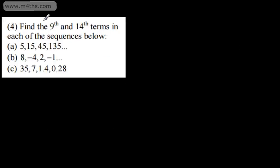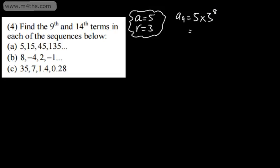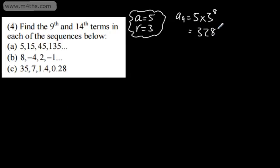Let's move on to question 4. We're asked to find the 9th and 14th terms in each of the sequences below. This time we have a first term but we need to find the common ratio. 15 over 5 is 3, 45 over 15 is 3, 135 over 45 is 3, so we can say A, the first term, is 5 and the common ratio R is 3. So A9 will be equal to 5 times 3 to the power of 8, and that is going to give me 32805.